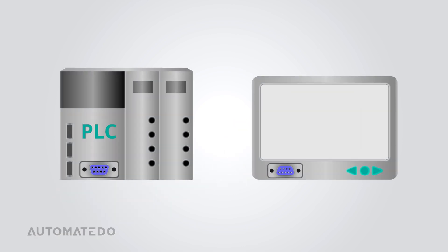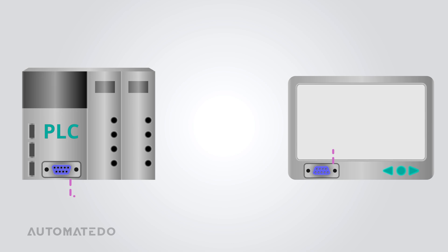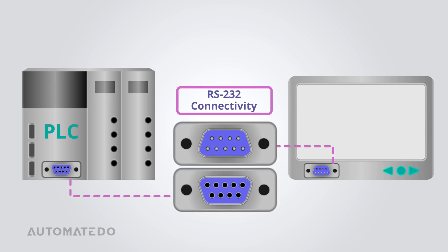Despite being a long-standing standard, RS-232 connectivity still appears on some industrial automation equipment specifications due to its reliability and simplicity for particular legacy systems and applications.